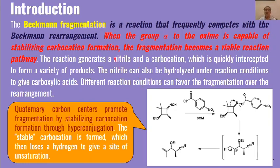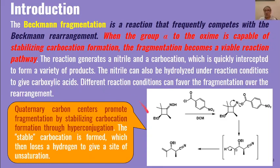When fragmentation occurs, the intermediate gives a stable nitrile, and a carbocation is formed. This carbocation quickly changes to form a variety of products. Under some conditions, this nitrile can be hydrolyzed to give a carboxylic acid or an amide, depending upon the conditions used for hydrolysis.